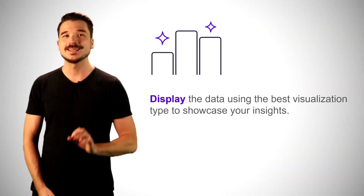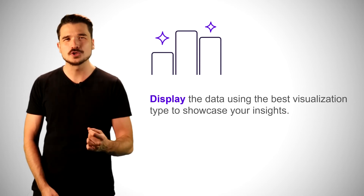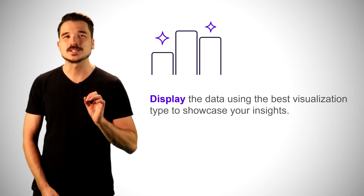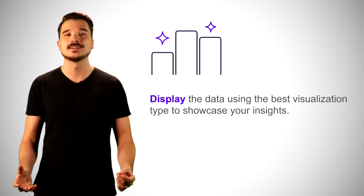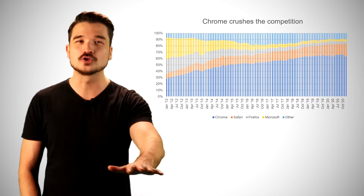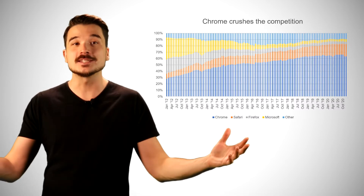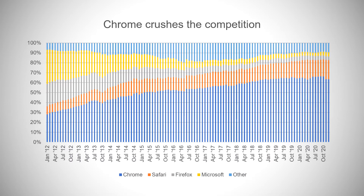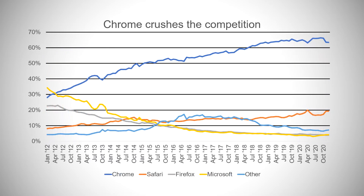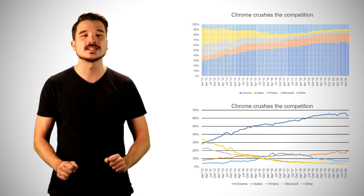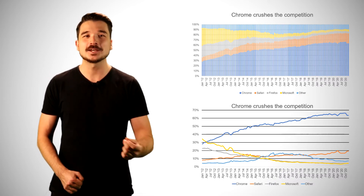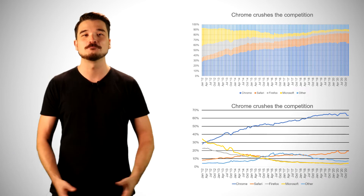Step two is display. We now have a critical choice to make: how do we display our data visually so that it's easy for our audience to understand? This 100% stacked bar chart is ultra busy — I'm almost getting dizzy looking at it. Our go-to choice for visualizing trends over time is generally going to be a line chart. Compared with the 100% stacked bar chart, the lines facilitate faster, easier comparison of each product's market share.